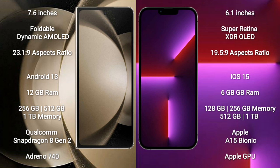Samsung Galaxy Z Fold 5 comes with 12GB RAM and 256GB, 512GB, or 1TB internal storage, with a Qualcomm Snapdragon 8 Gen 2 processor and Adreno 730 GPU. iPhone 13 Pro comes with 6GB RAM and 128GB, 256GB, 512GB, or 1TB internal storage, with an Apple A15 Bionic processor and Apple GPU.